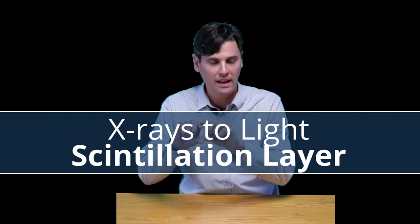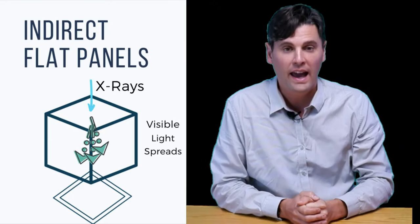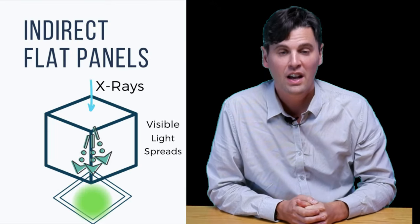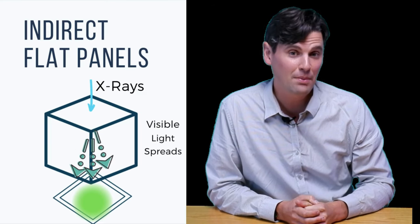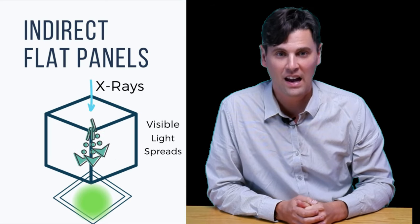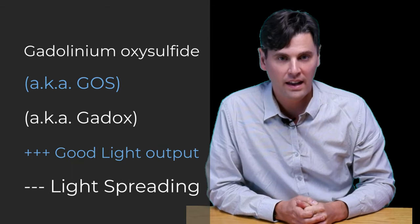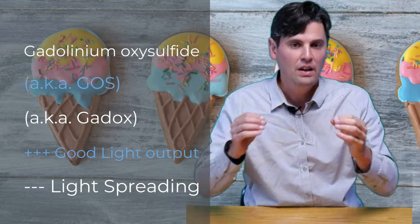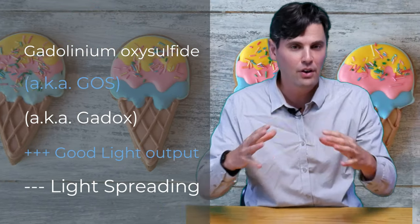Both types of indirect flat panels start with one thing: a scintillation layer. That's the layer in which the x-rays come down and interact. Out from that interaction comes visible light. One scintillator option is gadolinium-based, often referred to as GOS or gadox. The gadolinium-based scintillator has good light output, but the light comes out relatively isotropically in a cone from where the x-ray interacts.